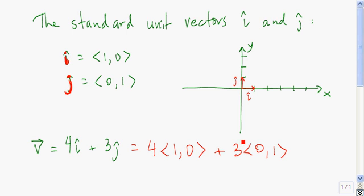That's 4 times the vector <1, 0> plus 3 times the vector <0, 1>. So that's the vector <4, 0> plus the vector <0, 3>. And finally, we have the vector <4, 3>.